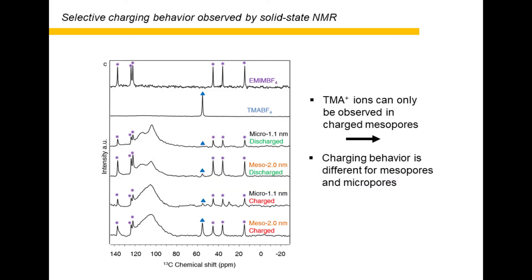In order to figure out the difference between micropores and mesopores, we performed solid-state NMR. On carbon-13 spectra, six types of carbon on EMIM and one type of carbon on TMA can be identified. The signature peak for TMA can be clearly distinguished from the six EMIM peaks. For mesopore-rich carbon, the intensity of the TMA peak becomes even stronger than the EMIM peak after charging, meaning TMA ions are absorbed on the electrode surface and are closer to the surface of electrodes. For micropore carbon, the signature peak of TMA does not show a clear change before and after charging, meaning the state of TMA did not change after charging. The NMR spectra clearly indicate that TMA ions can only access the mesopores after charging, but cannot enter the micropores.